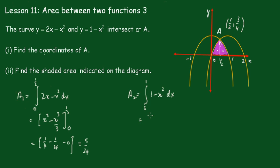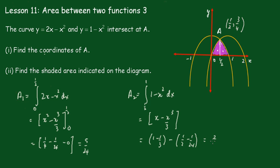For the second area, integrating 1 minus x squared gives x minus x cubed over 3, evaluated between one half and 1. Be very careful with these fractions. That's 1 minus one third, minus (one half minus one twenty-fourth), which gives two thirds minus eleven twenty-fourths, and that becomes 5 twenty-fourths — the same area, showing a certain symmetry.